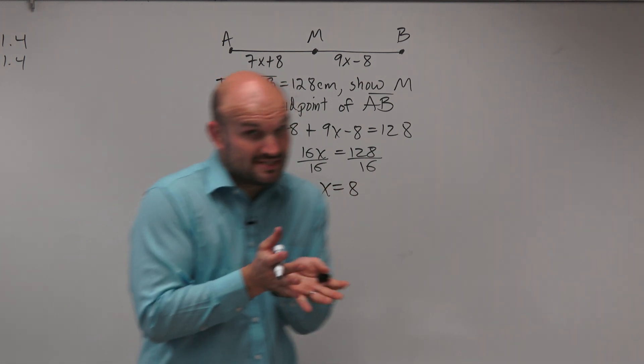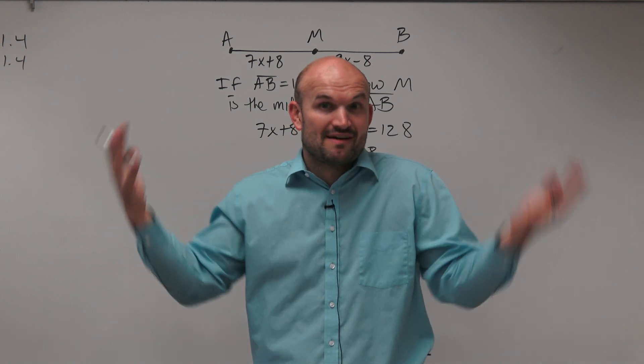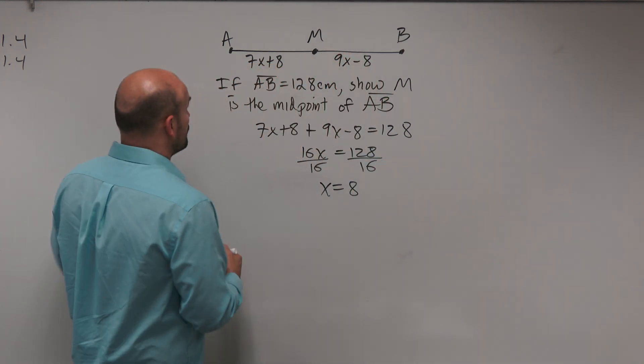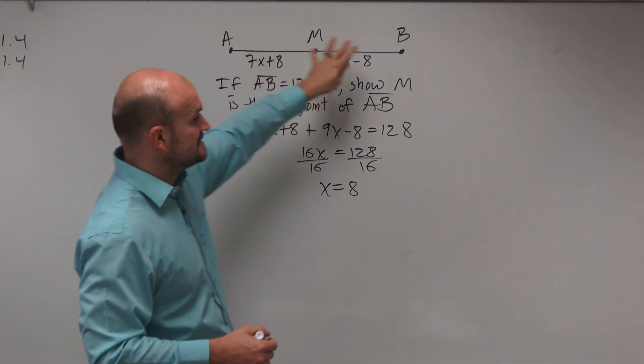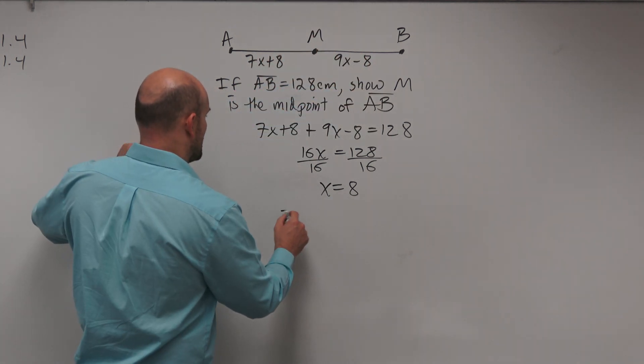That still hasn't shown us anything. That just tells us the value of x - we solved an algebra problem. To show that M is the midpoint, we need to show that AM equals MB.